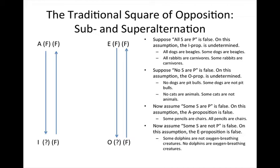In each of these immediate inferences, the results are true and false respectively. Now cast your eye back to the chart. Look at the I proposition under the assumption that it's false — the arrow leading upwards yields a false superaltern. The same goes with the O proposition: when the O is false, the E is false. Take a look at the examples for each before moving on.